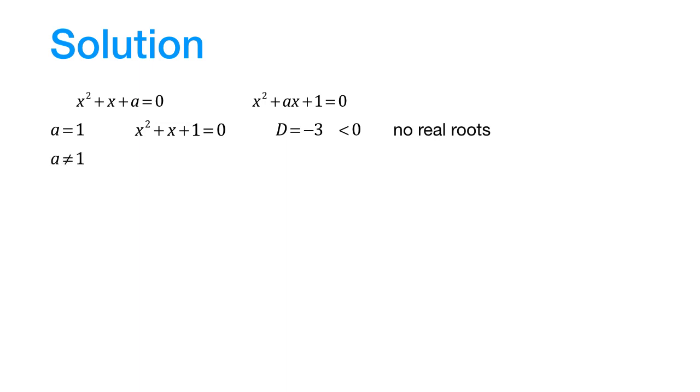If A is not equal to 1, then to find out the common root, we can take the difference of these two equations. So on subtracting, we get this linear equation which can be written down like this.